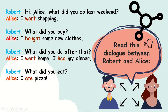Robert: 'Hi Alice, what did you do last weekend?' Alice: 'I went shopping.' Robert: 'What did you buy?' Alice: 'I bought some new clothes.' Robert: 'What did you do after that?' Alice: 'I went home. I had my dinner.' Robert: 'What did you eat?' Alice: 'I ate pizza.' Notice the verbs: went, bought, went, had, ate — they are all irregular verbs.